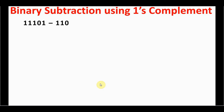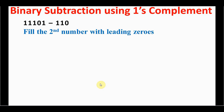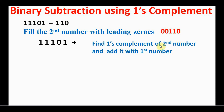We can perform the same binary subtraction using one's complement. Using the same example, the first step is to fill the second number with leading zeros so both numbers have the same digit count. The first number has five digits and the second has three, so add two leading zeros to the second number. Then find the one's complement of the second number by converting zeros to ones and ones to zeros. So zero-zero-one-one-zero becomes one-one-zero-zero-one.